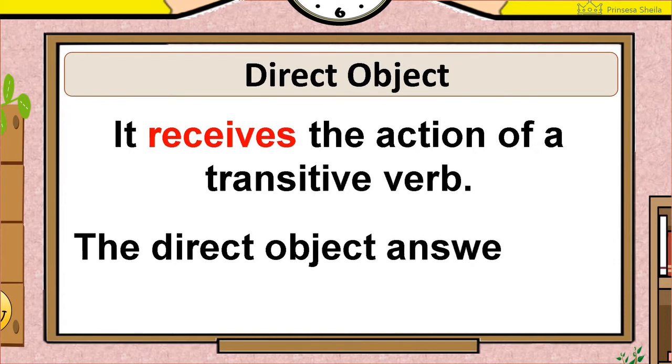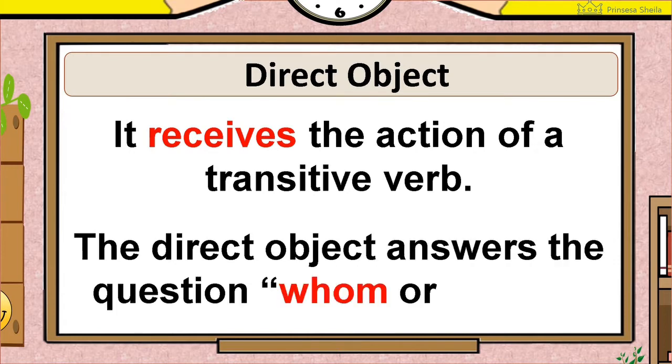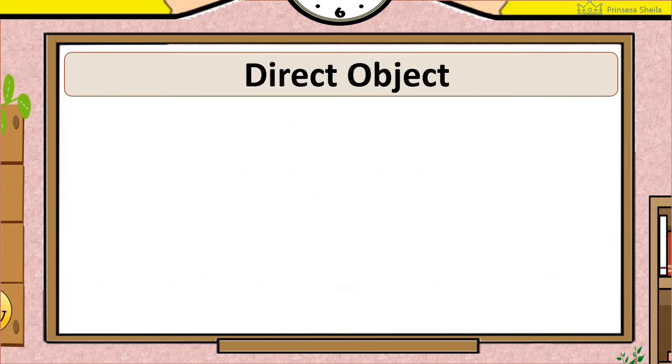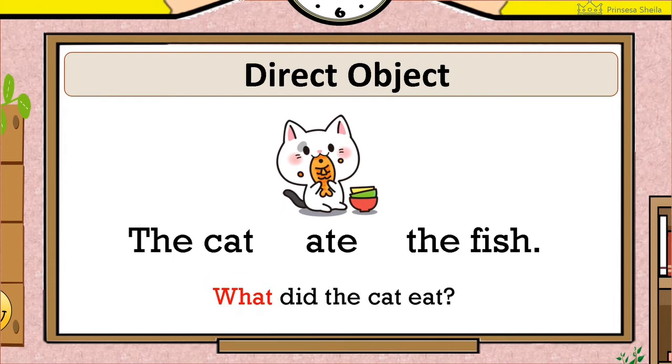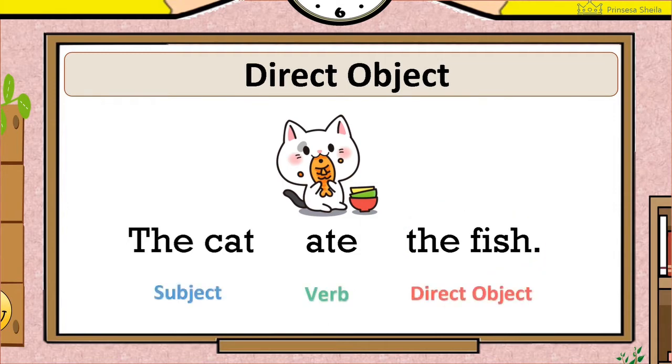The direct object answers the question whom or what. For an example, the cat ate the fish. What did the cat eat? The fish. So the cat is the subject. Ate is the verb. The fish is the receiver of the action or direct object.